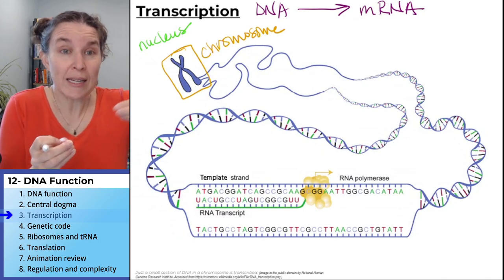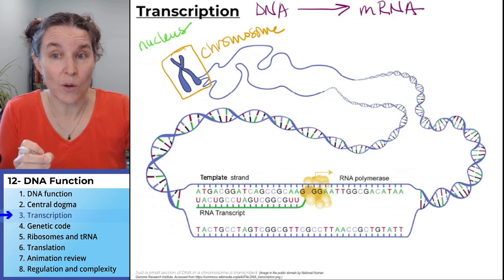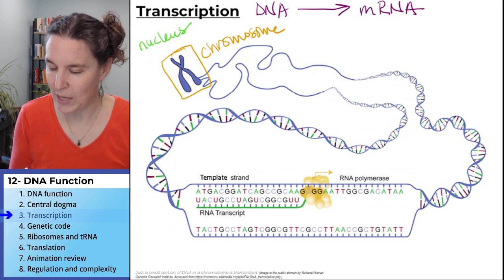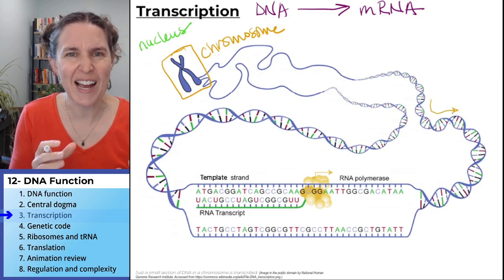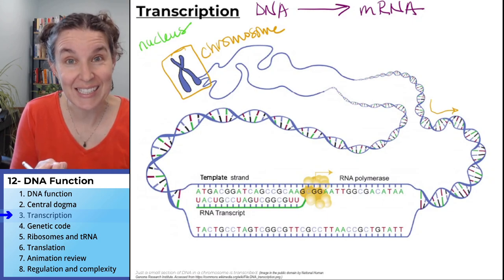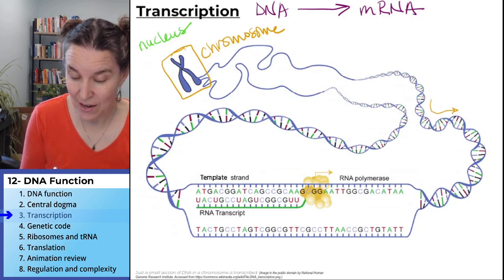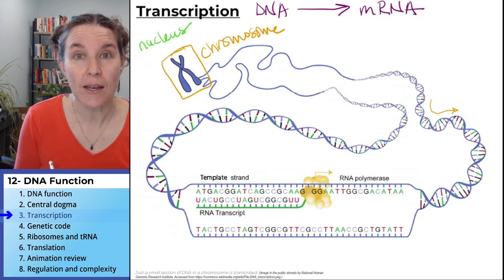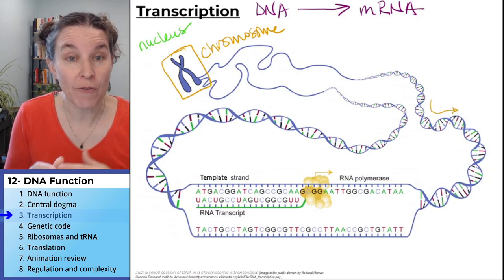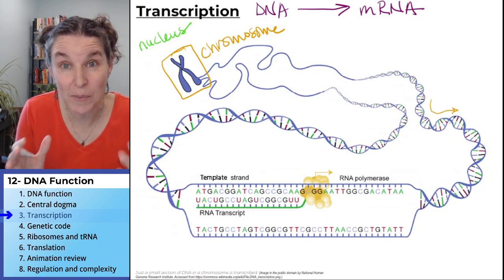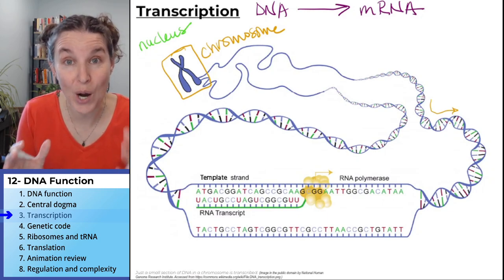So let's unwind this chromosome. You can see this string of DNA — super stringy — but it starts to become visible that it actually is a double helix. And then you can see that we're not making messenger RNA from the whole thing; we're making messenger RNA just from a little part of it.